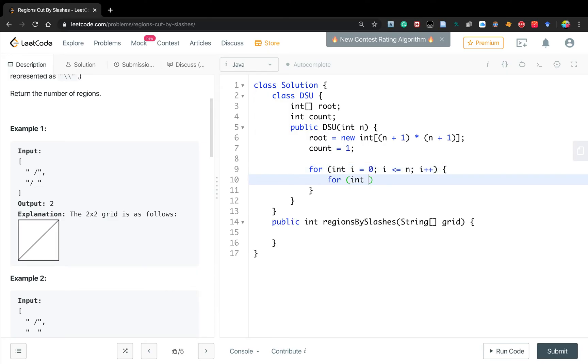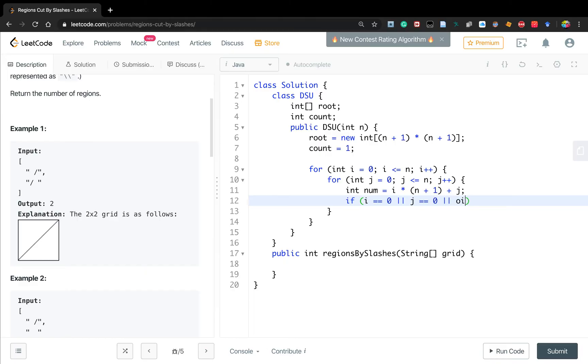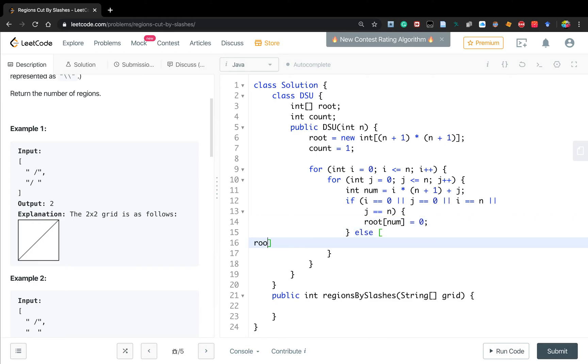For int i equal to zero, i less or equal to n, i plus plus. For int j equal to zero, j less or equal to n, j plus plus. We need to know the index in the 1D array, so that will be i times n plus one plus j. If i equal to zero, j equal to zero, or i equal to n, or j equal to n, we're in the borders. We just let the root number equal to zero. Otherwise, we just let the root number equal to itself, the number.